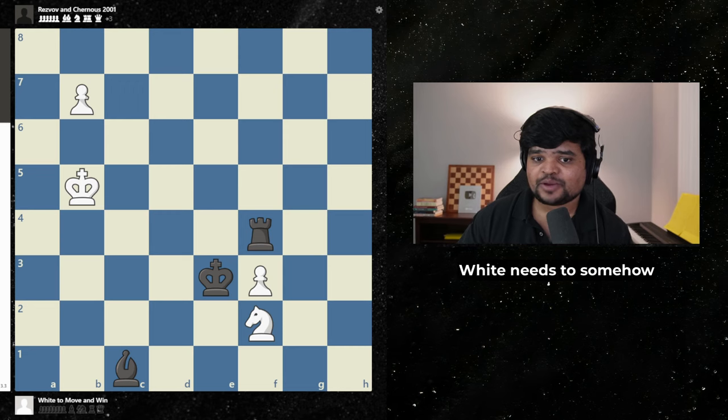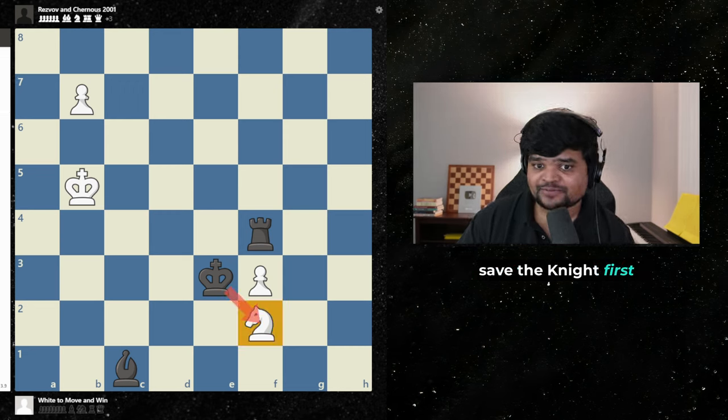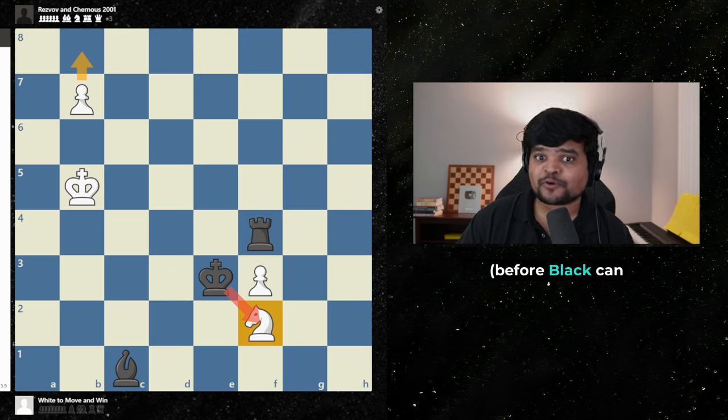So to win this game, white needs to somehow save the knight first and then make a queen before black can stop us with rook f8. How do we do it?